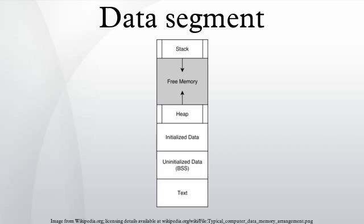The heap area commonly begins at the end of the BSS and data segments and grows to larger addresses from there. The heap area is managed by malloc, realloc, and free, which may use the BRK and SBRK system calls to adjust its size.